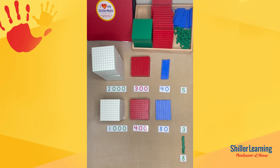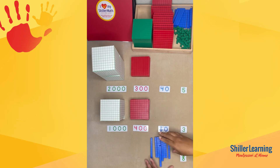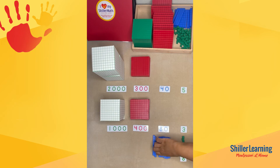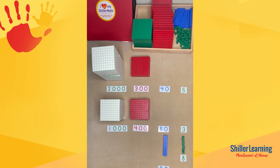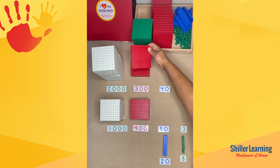Then we're going to take our tens and bring those down. We've got four and eight, and that's 12. At this point the student knows that once you get to 10 of any of the place values, you need to exchange that. So they're going to take 10 of those tens, leaving the two tens there, and exchange those for a hundred.